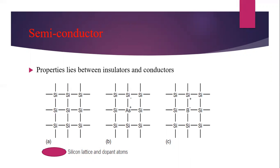If the temperature is increased beyond zero Kelvin, the electrons in the valence band absorb energy and jump to the conduction band. Free electrons are then available. In the case of n-type semiconducting materials, electrons are the majority carriers. The movement of that carrier produces current. So in some cases it acts as an insulator and in some cases it acts as a conductor.